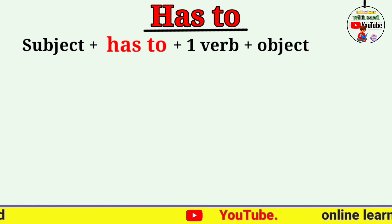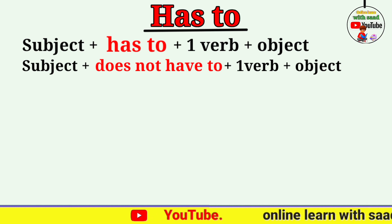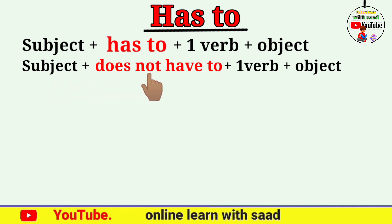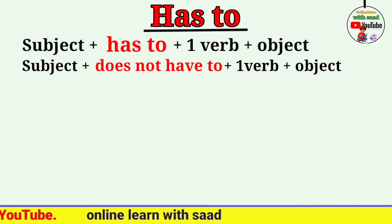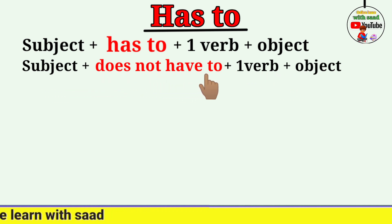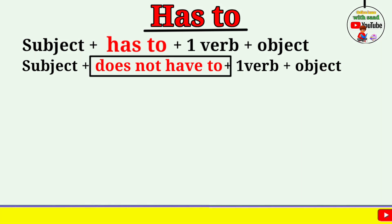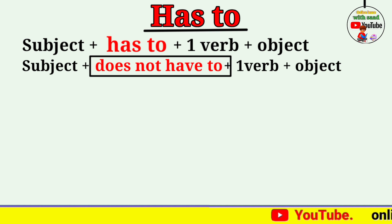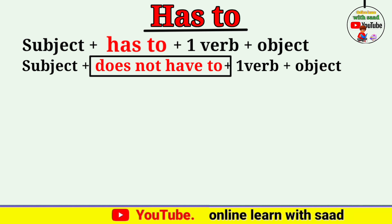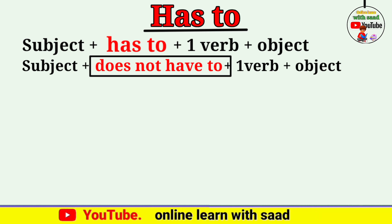چلتے ہیں negative جملوں کی طرف۔ 'Has to' کی negative structure ہے: Subject + does not have to + first form of verb + object۔ 'Does not have to' لگایا کیونکہ یہ singular ہے — singular کے لیے 'does' آتا ہے۔ 'Have to' کے negative میں 'do not have to' لگاتے تھے، یہاں 'does not have to' استعمال کریں گے۔